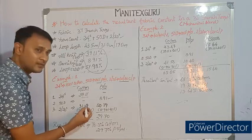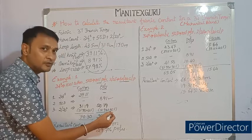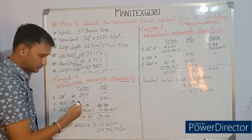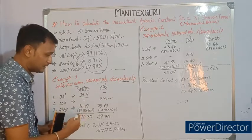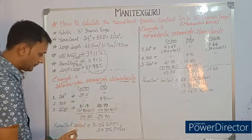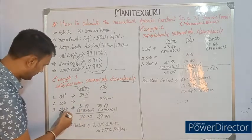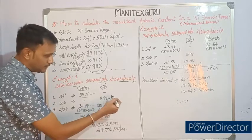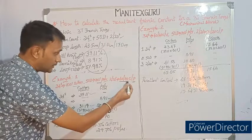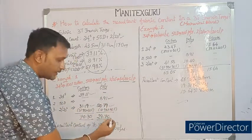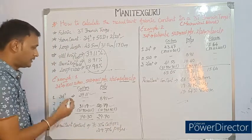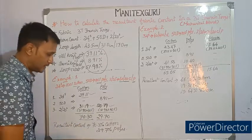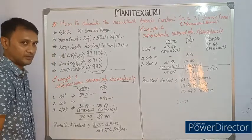Splitting the looper contribution of 51.98%: 60% for cotton gives 31.19%, and 40% for polyester gives 20.79%. Now summing up: cotton = all-knit 39.11% + looper cotton 31.19% = 70.30%. Polyester = semi-knit 8.91% + looper polyester 20.79% = 29.70%. So the resultant fabric content for Example 1 is 70.3% cotton and 29.7% polyester — this is the dual blend result.